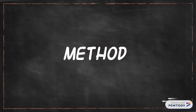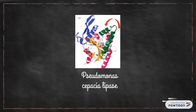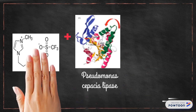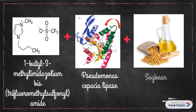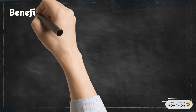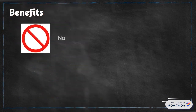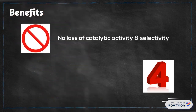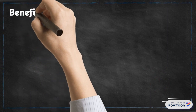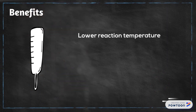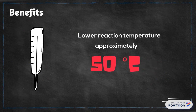Pseudomonas cepacia lipase supported in 1-butyl-3-methylimidazolium bis(trifluoromethylsulfonyl)imide ionic liquid for biodiesel synthesis from the trans-esterification of soybean oil is suggested. It was observed that without loss of catalytic activity and selectivity, the recovered ionic liquid and enzyme catalytic system can be recycled at least 4 times. In addition, a lower reaction temperature of about 50°C for rapid reaction is achieved in this green synthesis of biodiesel.